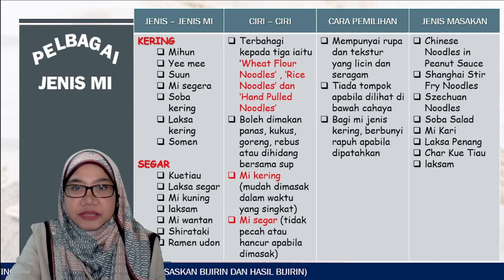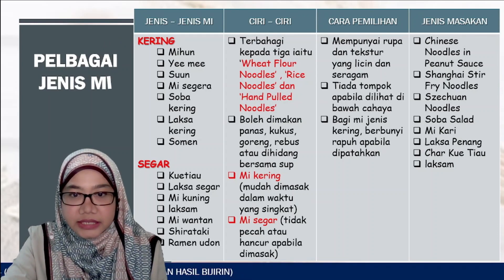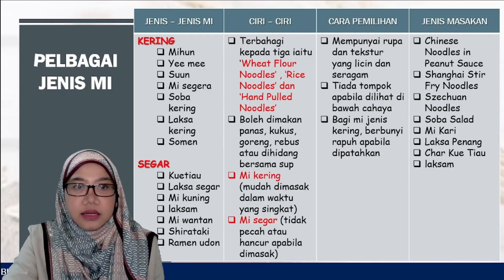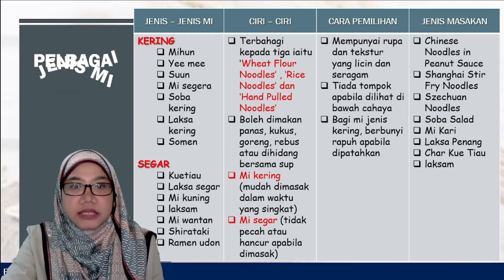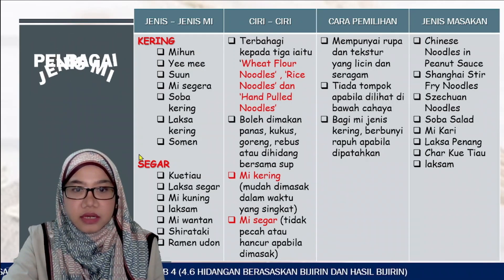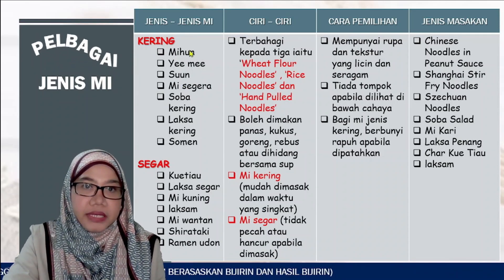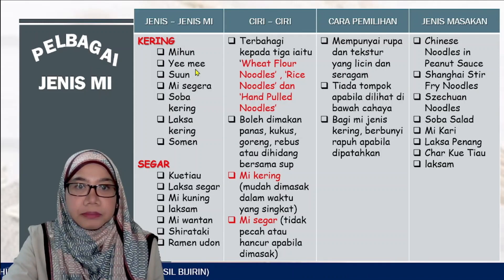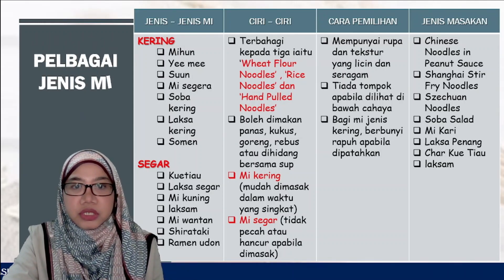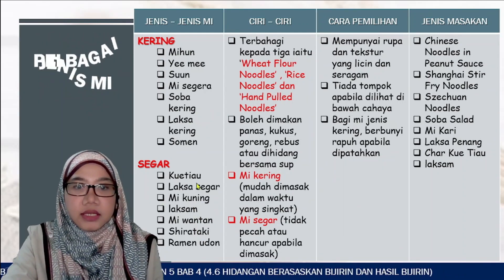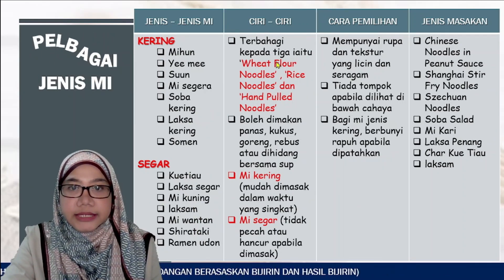Sekarang kita akan lihat jenis-jenis mi. Pelbagai jenis pasta tadi dihasilkan daripada tepung gandum. Mi pula biasanya daripada tepung beras, iaitu hasil bijirin daripada beras. Jenis-jenis mi termasuk bihun, yimi, mi segera, laksa, kuetiau dan banyak lagi, dalam bentuk kering mahupun segar.